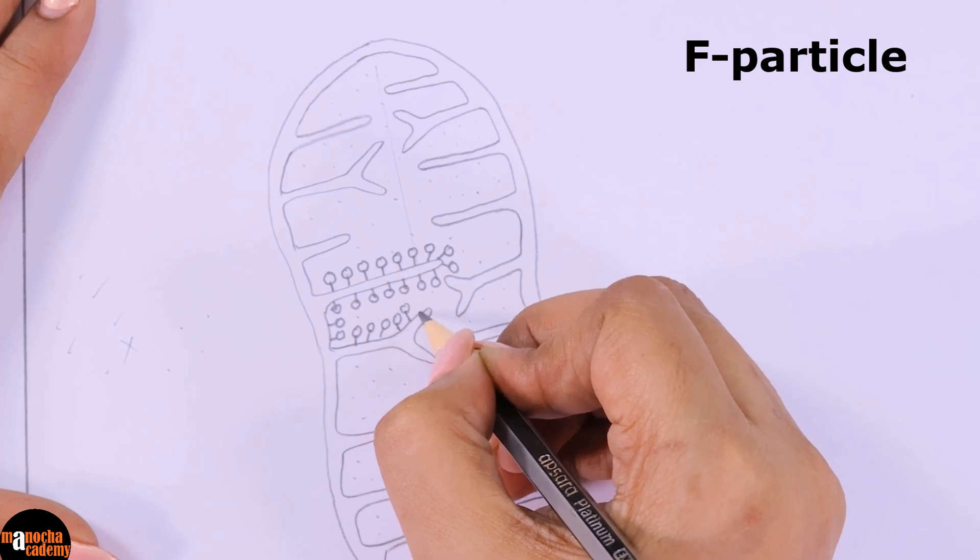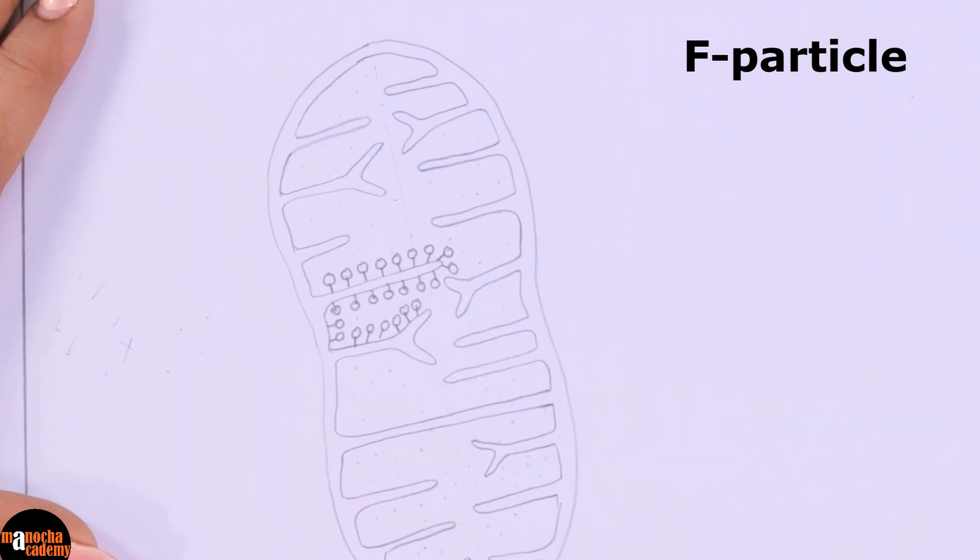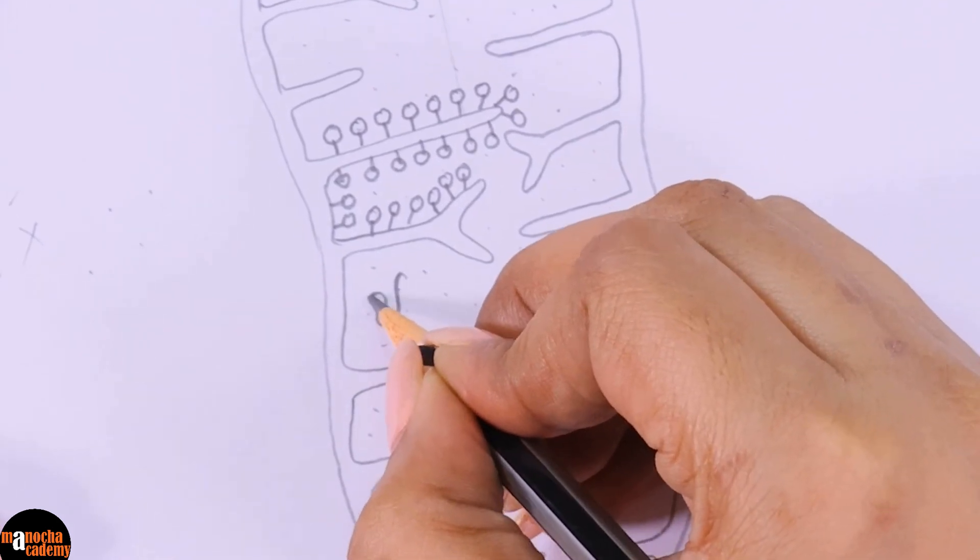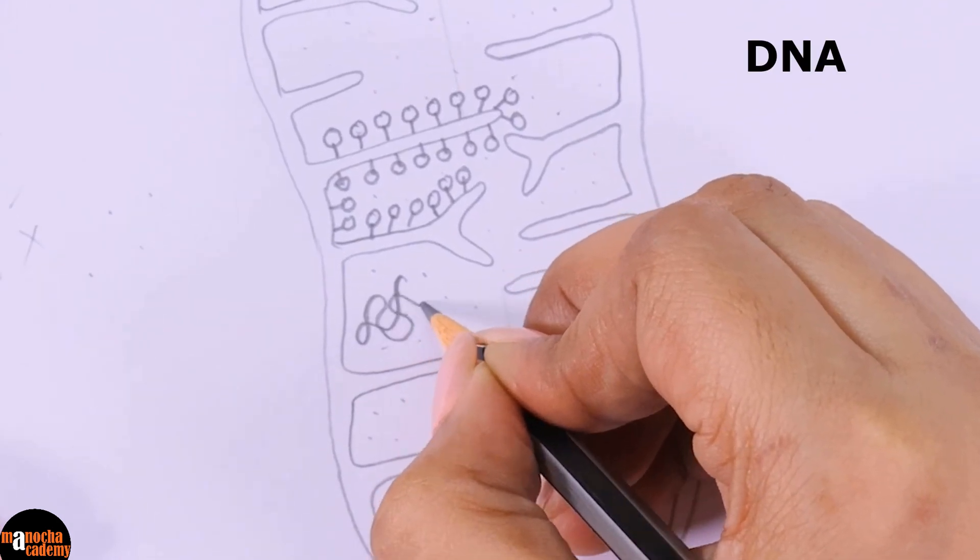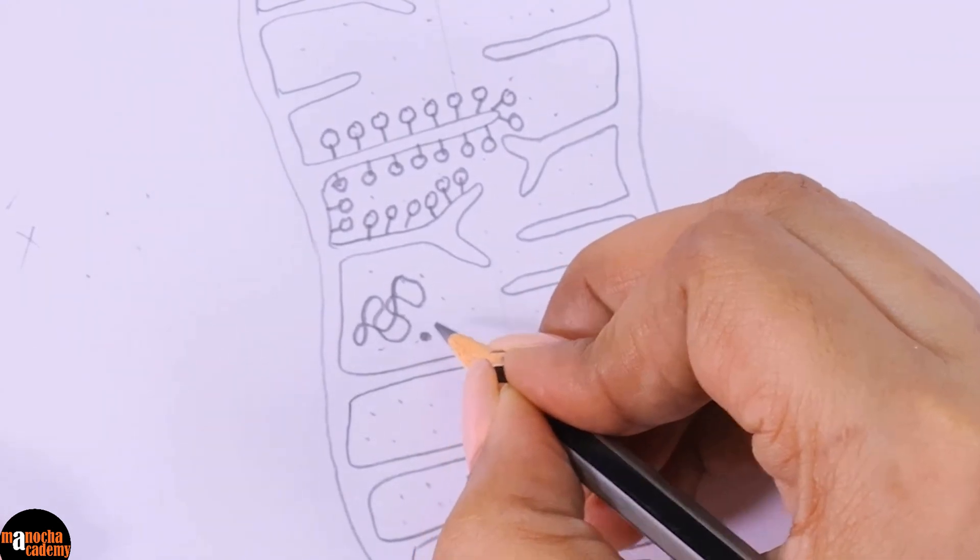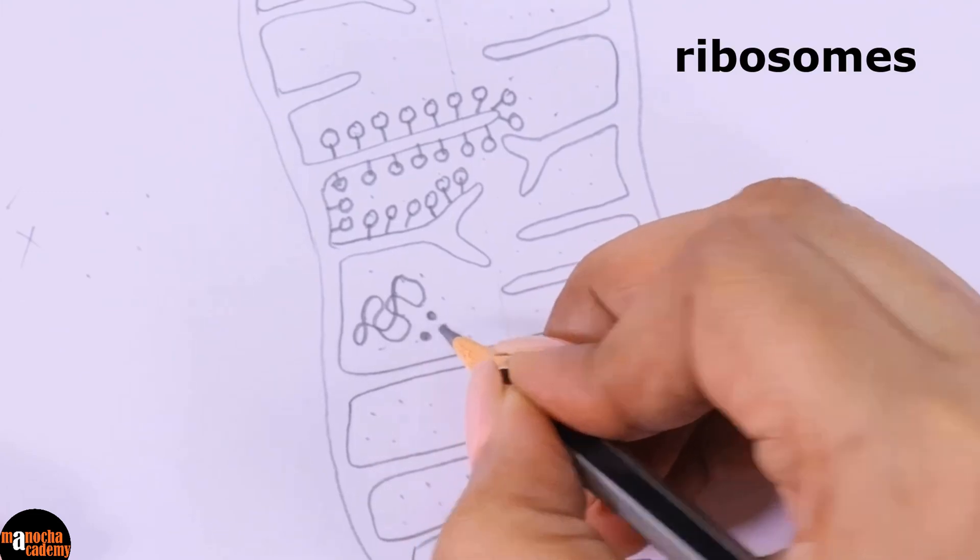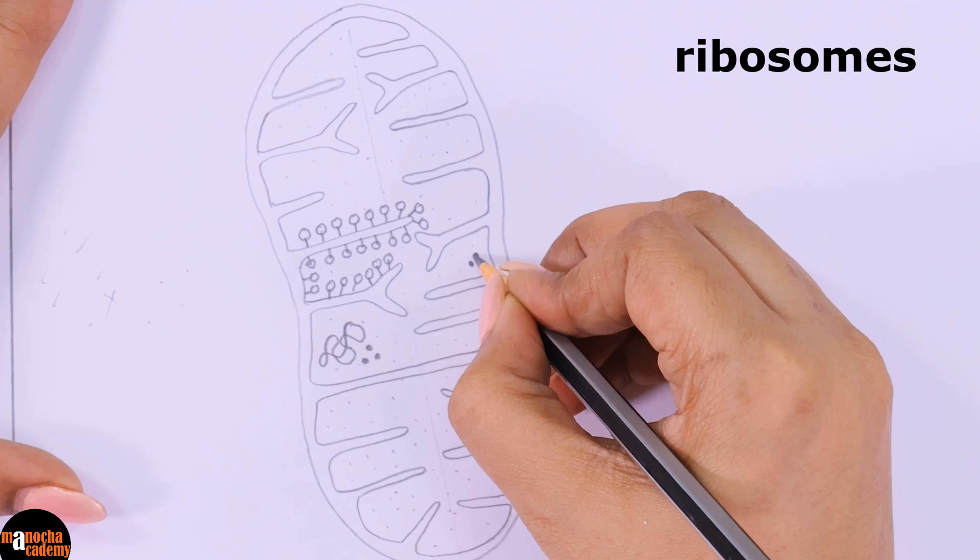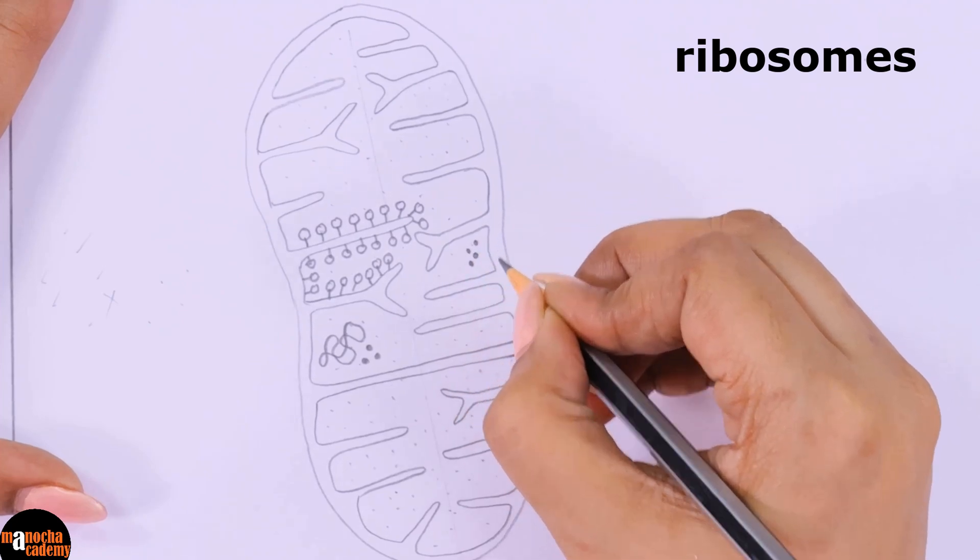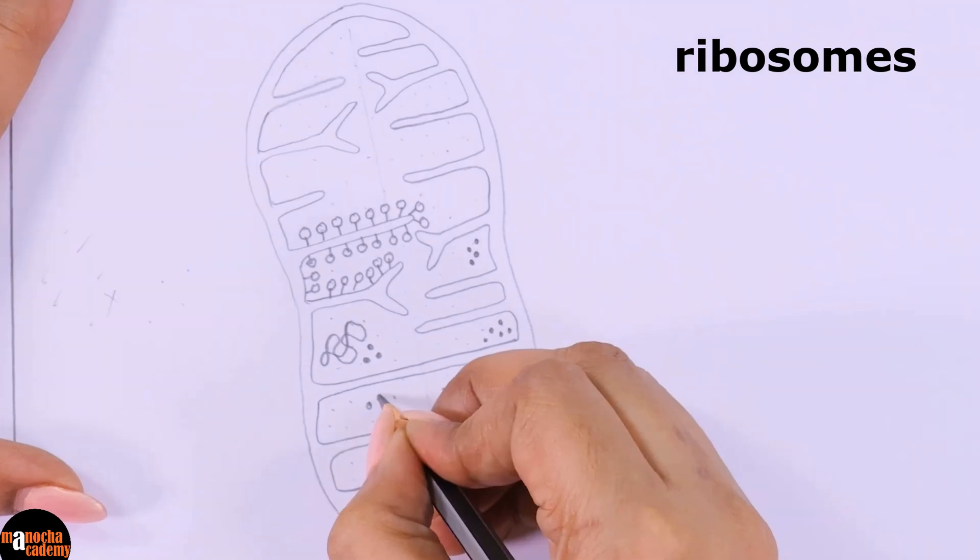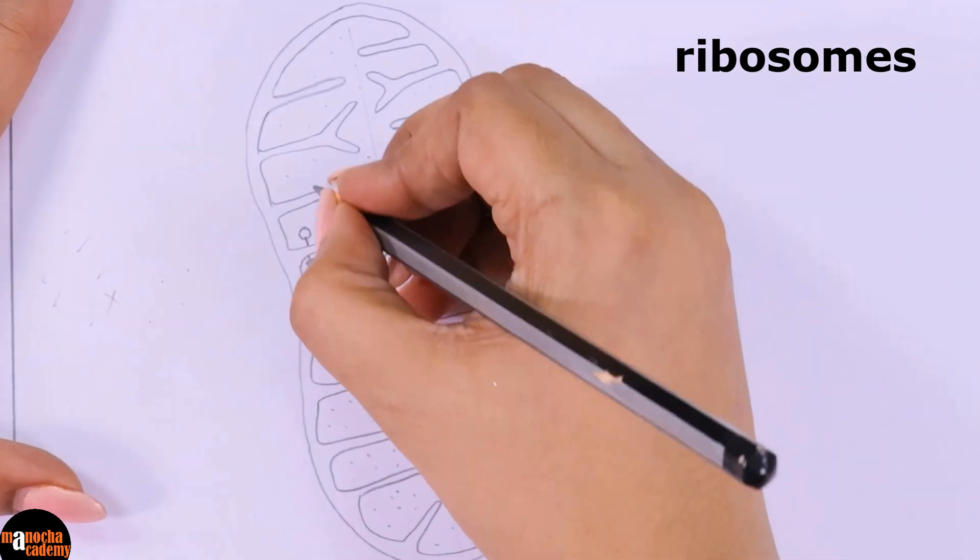Mitochondria has its own DNA, so we will draw one DNA. Along with the DNA, we are going to draw some ribosomes for protein synthesis. The ribosomes should be larger than the size of the dots that you have used for drawing the matrix.